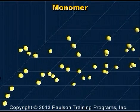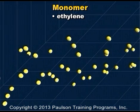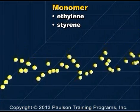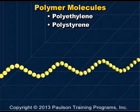To make a plastic, we start with small molecules called monomers. The monomer for polyethylene is ethylene. The monomer for polystyrene is styrene. The monomer units, or molecules, are combined to make the long molecules called polymer molecules.